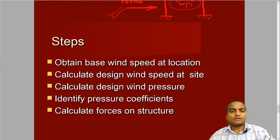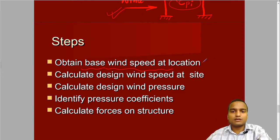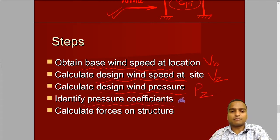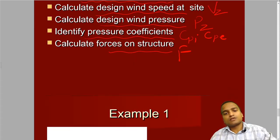This is the step. First of all, we have to get the base wind speed Vb. Then we calculate design wind speed Vz at any site. Then we calculate wind pressure Pz. Then we identify the pressure coefficient Cpi and CpE. And then we calculate the wind load.